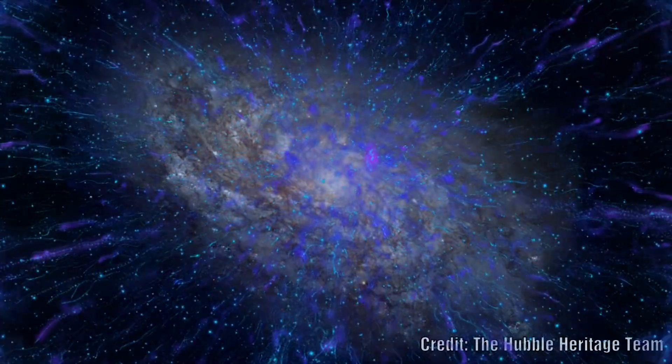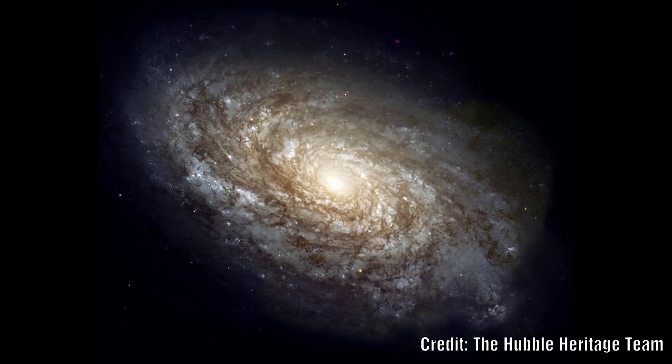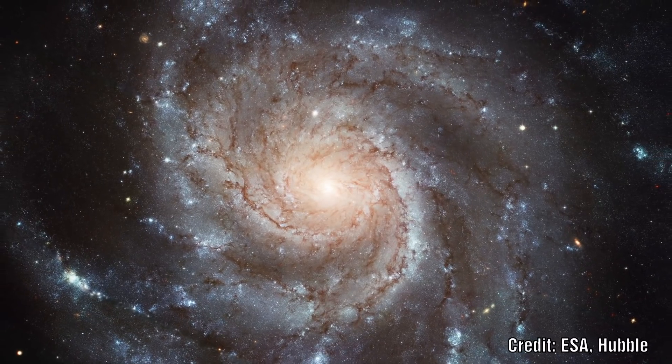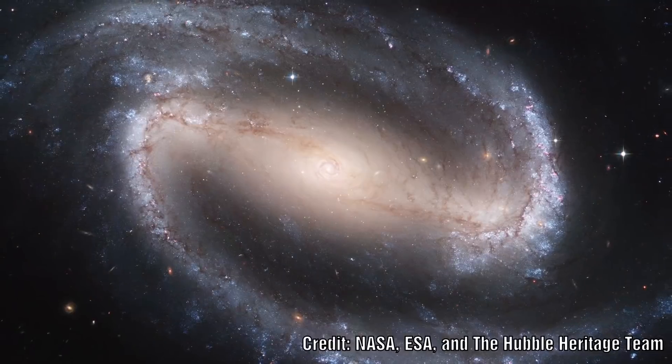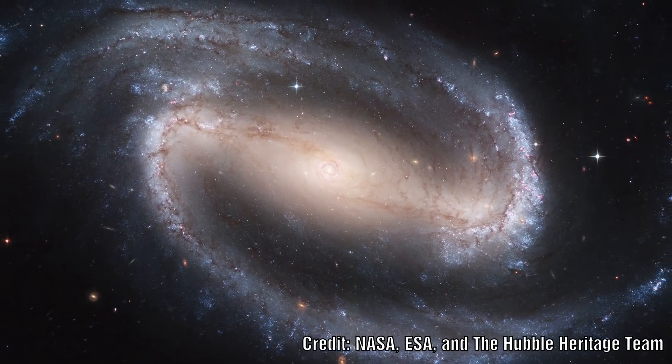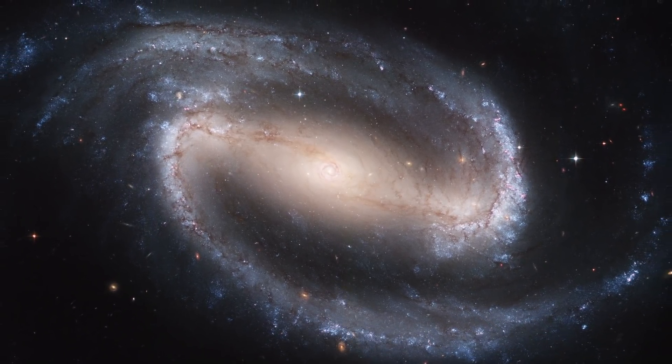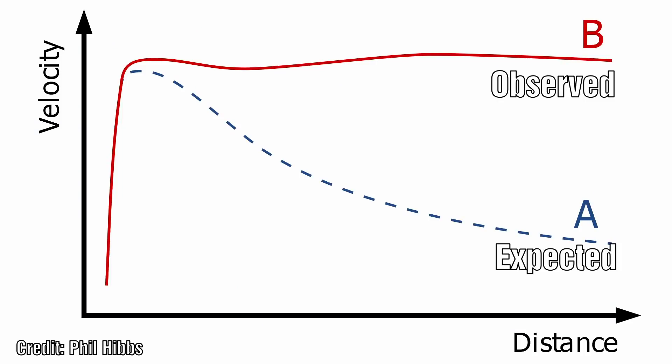Our first observations of galaxies showed them to be quite isolated from each other in space. We had expected these galaxies to have an inverse square gravitational field, meaning that as we move further from the center the rotation should slow down.